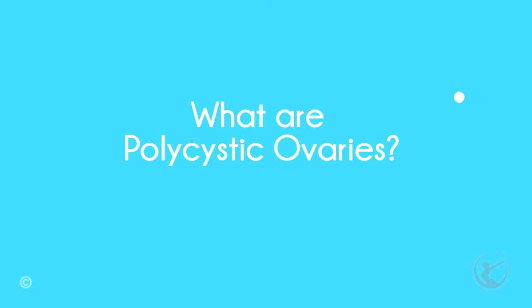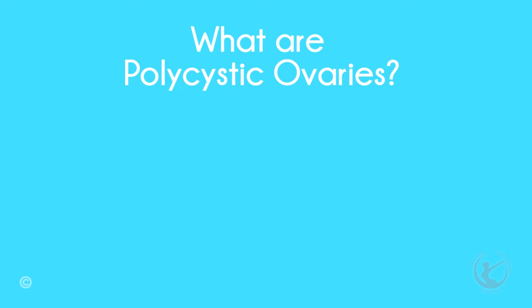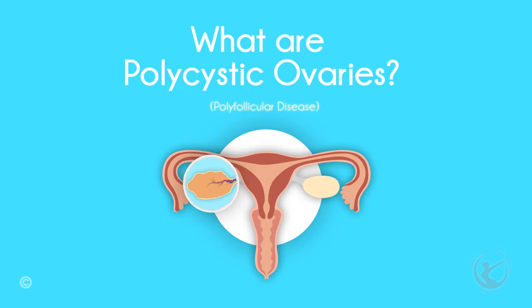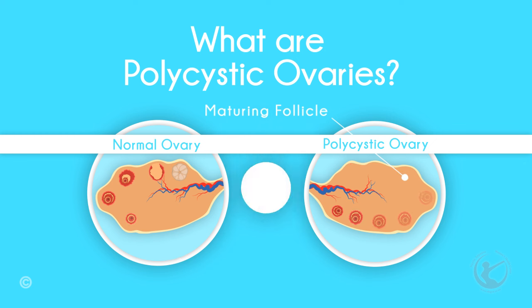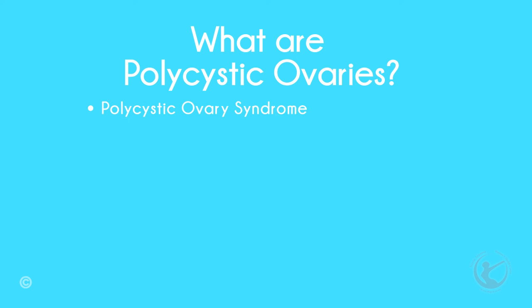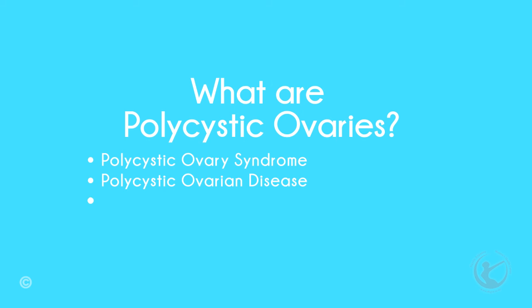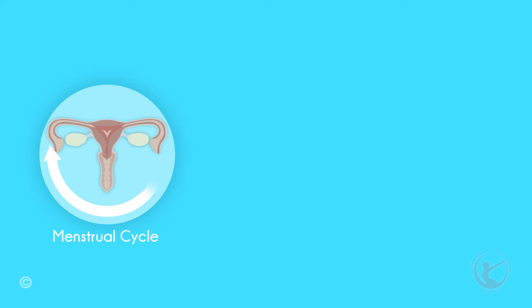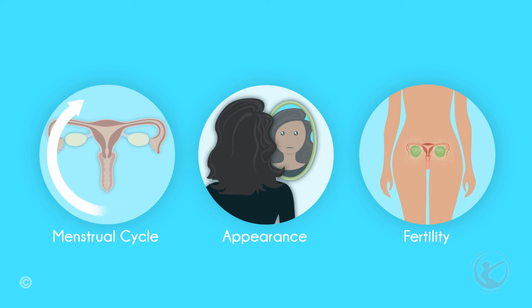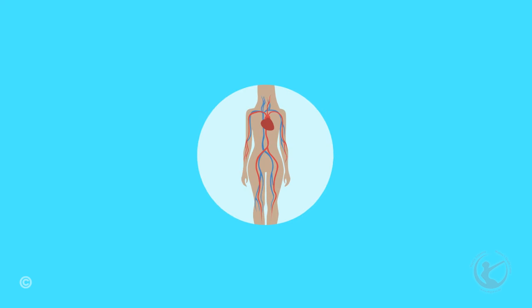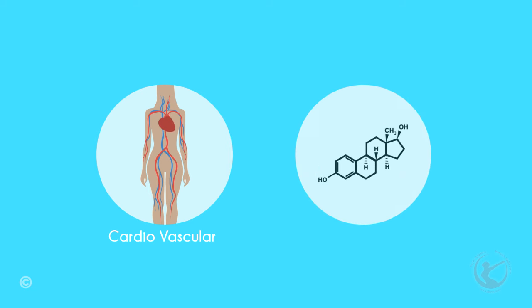What are polycystic ovaries? The condition should rarely be called polyfollicular disease, because the ovaries have a number of follicles in them rather than being cysts. Polycystic ovary syndrome, polycystic ovarian disease, or Stein-Leventhal syndrome are a spectrum of the same condition that affects some or all of the following: menstrual cycle, fertility, appearance, cardiovascular system, and hormones.